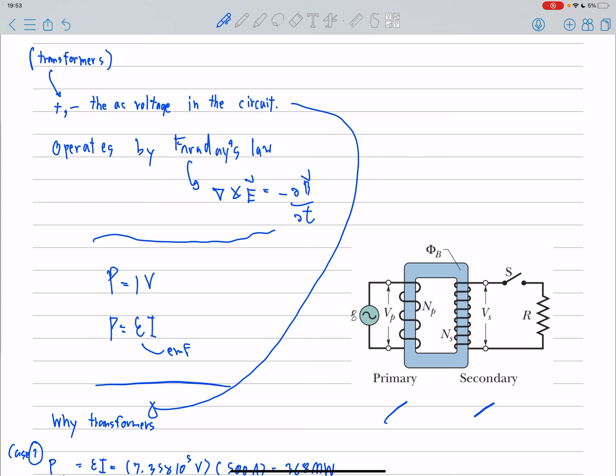Transformers can increase or decrease AC voltage in the circuit, operated by Faraday's law. So P is equal to IV and V is equal to EMF. So P is equal to EMF multiplied by I.